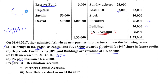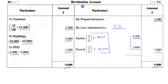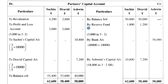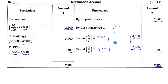Next, record the reserve fund. The reserve fund is a proportion of profit kept aside for business expansion or development, and it belongs to the partners. So it must be transferred to the old partners before admitting the new partner. Reserve fund is 3,000 rupees, transferred in the old profit sharing ratio: 3,000 × 3/5 = 1,800 for Sachin, and 3,000 × 2/5 = 1,200 for Dravid.